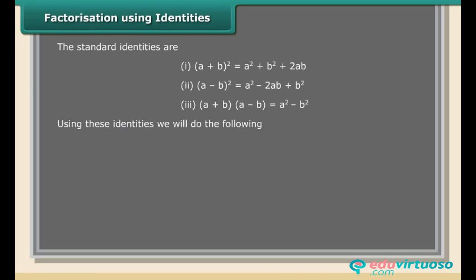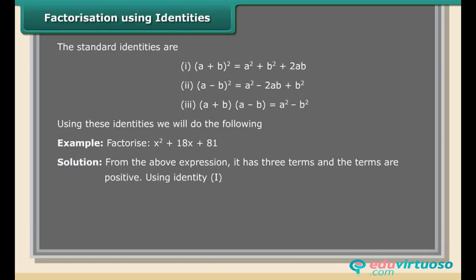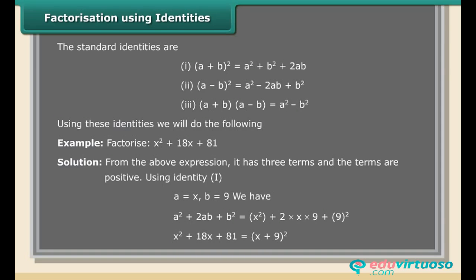Example: Factorize x² + 18x + 81. Solution: the expression has three terms and all are positive. Using identity 1 with a = x and b = 9: a² + 2ab + b² = x² + 2(x)(9) + 9² = x² + 18x + 81. Therefore, x² + 18x + 81 = (x + 9)².